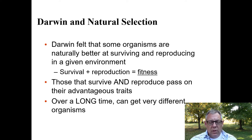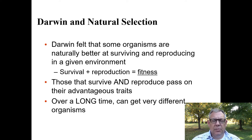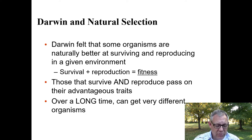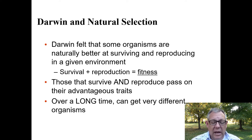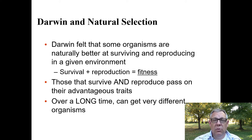Darwin thought that some organisms are just naturally better at surviving and reproducing in a given environment. This idea of survival and reproduction together is what we call fitness. Just surviving is not enough — the key is that you're also able to reproduce and pass your traits on to the next generation. Both are important to natural selection, but survival without reproduction will not be acted upon by natural selection. Those that survive and reproduce can pass on their advantageous traits, and if this process occurs over a long time you can get very different organisms.